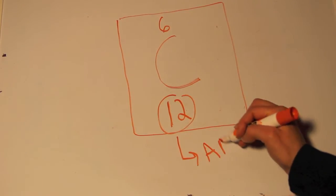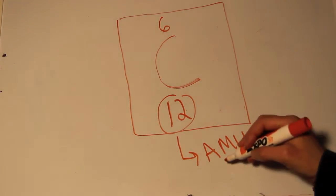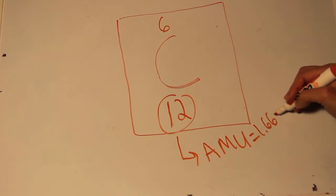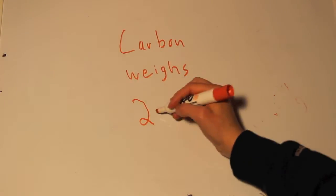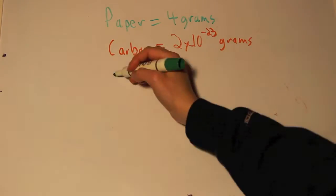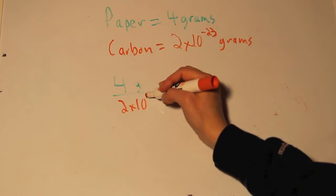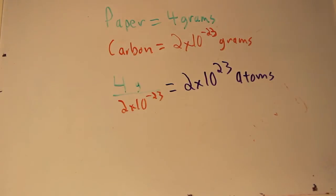There's a little number at the bottom, and this is the weight of a carbon atom in atomic mass units. One amu is about 1.6 times 10 to the negative 24 grams. Since carbon has 12 amus, its weight is about 2 times 10 to the negative 23 grams. If we divide the weight of the paper by the weight of an individual atom, we will get 2 times 10 to the 23 atoms.